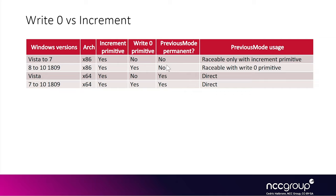In that last case, it's actually very useful to have the increment primitive work standalone without using previous mode at all, because it means we can still exploit the vulnerability. In practice, for the three top rows of the table, the increment primitive is also very useful because it simplifies exploitation significantly, even if it makes the exploits a little slower to run.